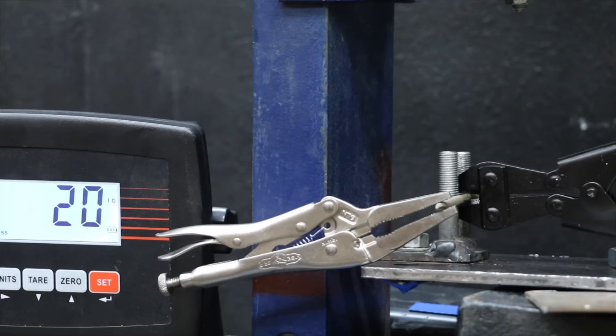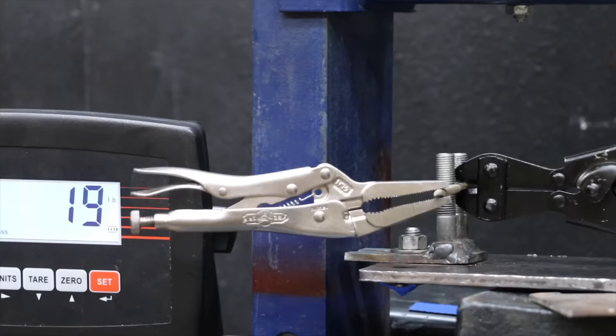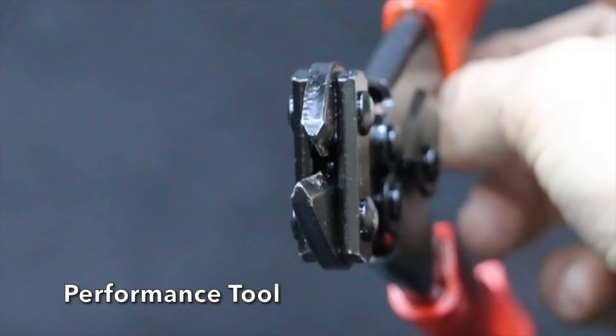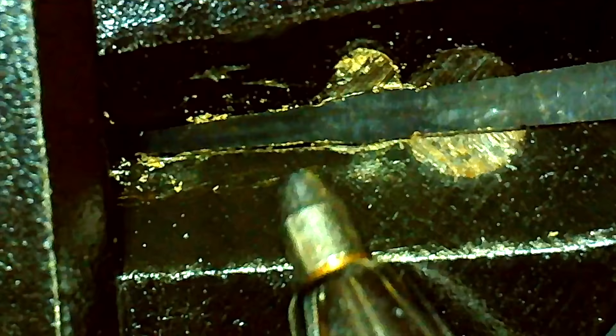It took a lot of squeezing force for the $7 Genford bolt cutters to make the cut at 166 pounds, but it did survive the test with minimal damage to the cutting knives. Unfortunately, the deck screw outperformed the Performance Tool bolt cutters. The deck screw held up just fine, but the lower jaw on the Performance Tool bolt cutters became badly bent at 164 pounds of force on the handle.